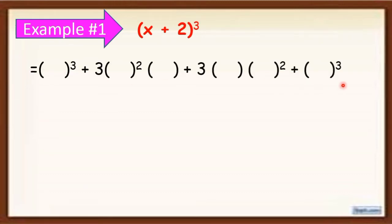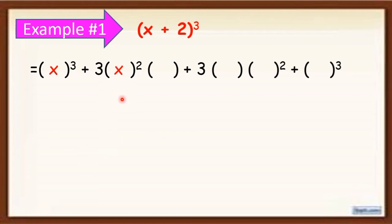As I said earlier, to get the product of the cube of a binomial: first, cube the first term, which gives x cubed; plus 3 times the square of the first term times 2; plus 3 times the first term times the square of the second term; plus the cube of the last term.